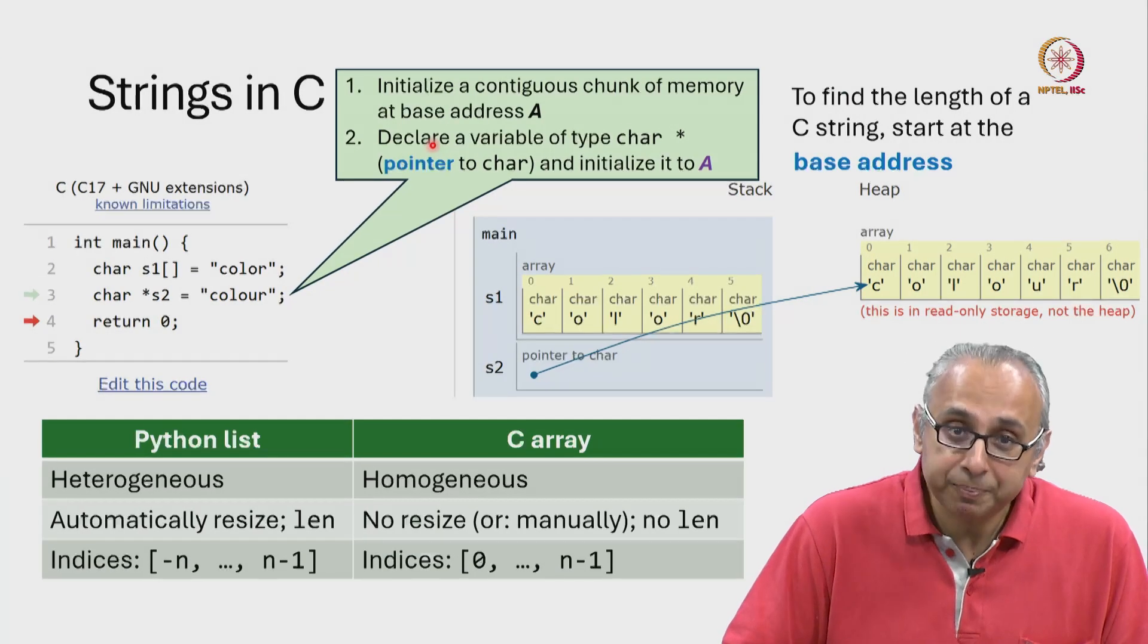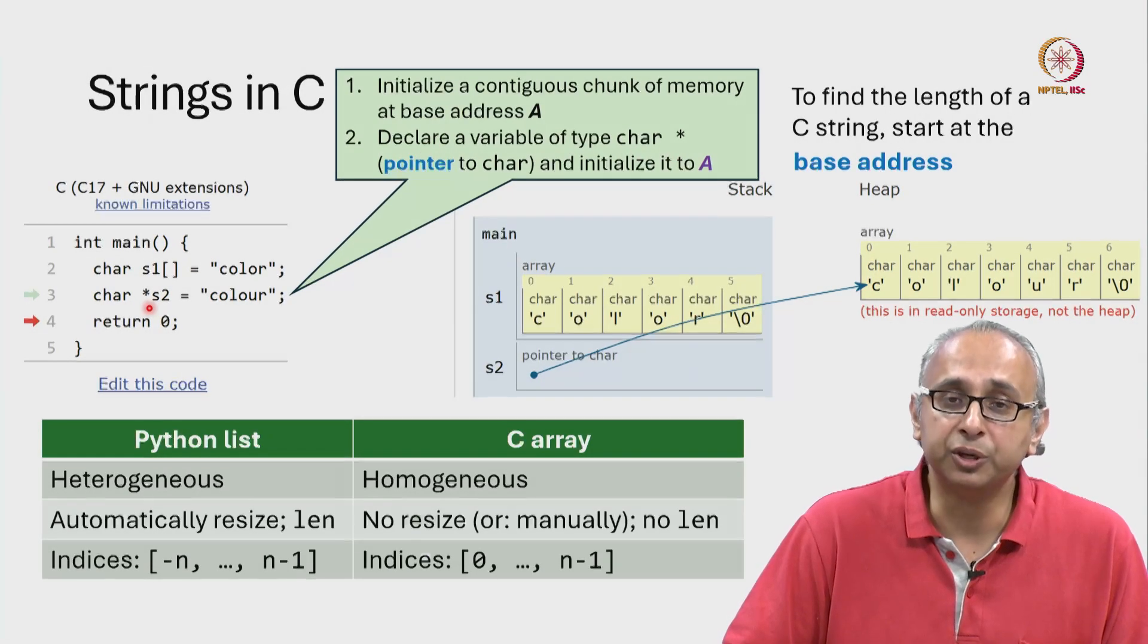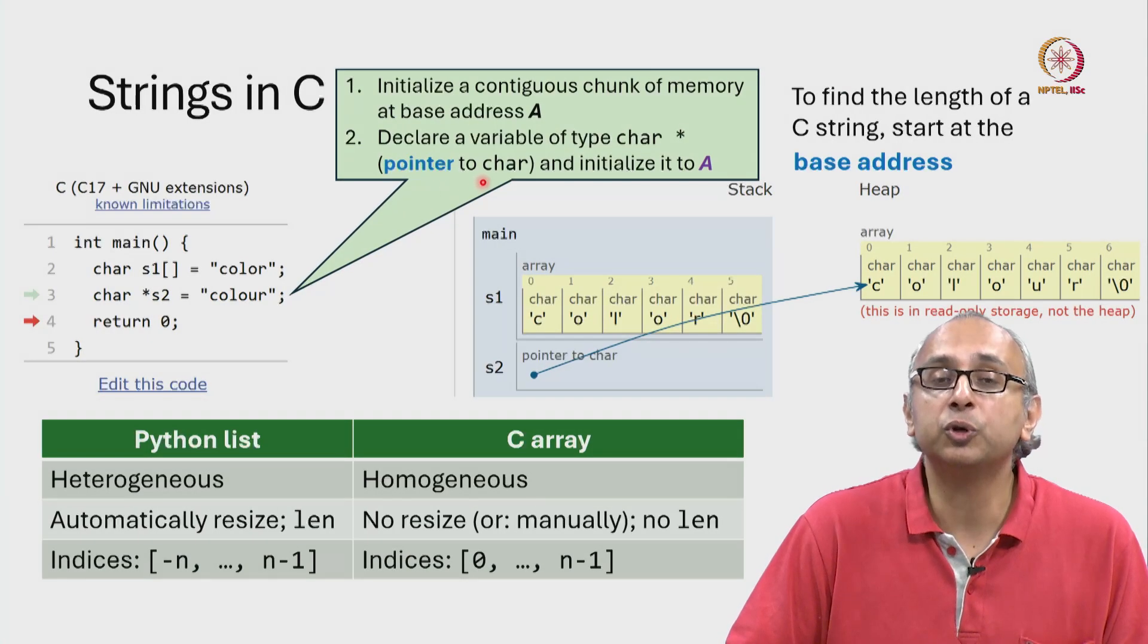But then, separately, declare a variable of type char star. That is the syntax that you see over here. This is pointer to char.